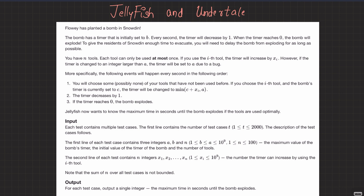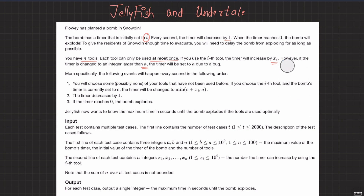The question is simple: there's a bomb initially set to b, and every second the timer decreases by one. When the timer hits zero, the bomb explodes. We have n tools, each usable at most once. If we use the add tool, the timer increases by xi. However, if the timer exceeds a, it is set back to a due to a bug. So the timer is bounded by a.